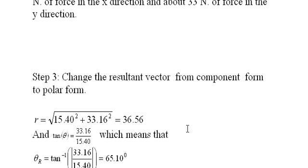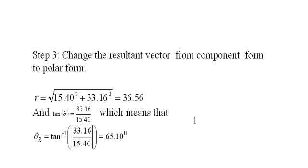Step three: we want to change the resultant vector, which is in component form, to polar form because that's more practical. We'll know how many newtons of force are acting total on this object and in what direction. We find the length of the vector by taking the square root of the x component squared plus the y component squared. We end up with 36.56. So that red vector delivers 36.56 newtons of force.